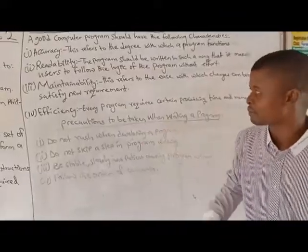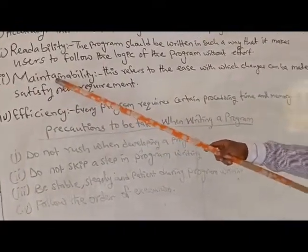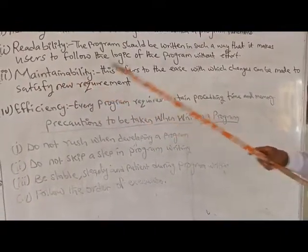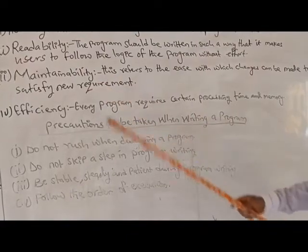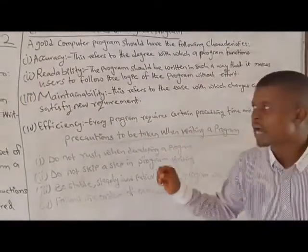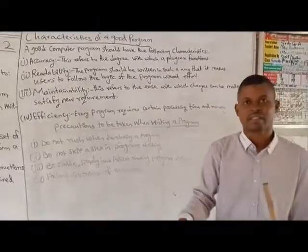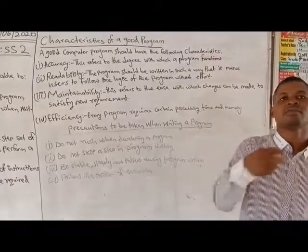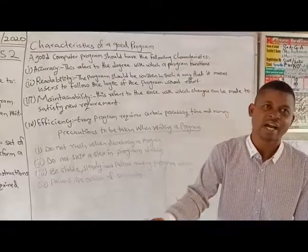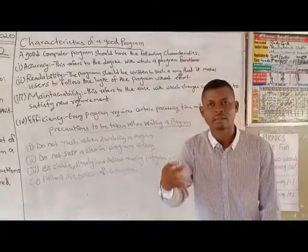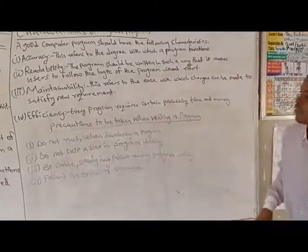The third characteristic is maintainability, which refers to the ease with which changes can be made to satisfy new requirements. For example, we have different versions of Zuma — the 2019 version and the 2020 version — where they have improved the quality of the pictures and the balls. That is what is called maintainability.